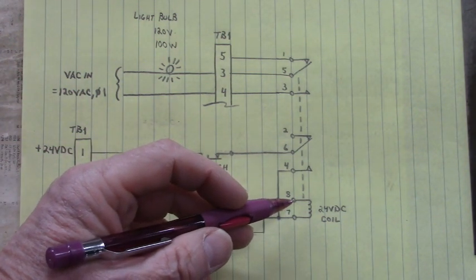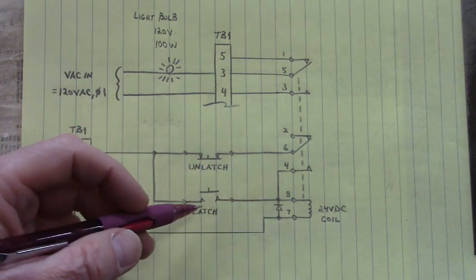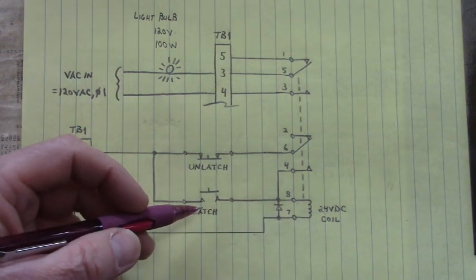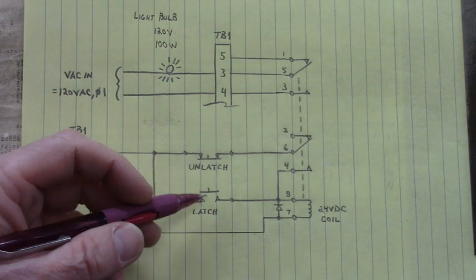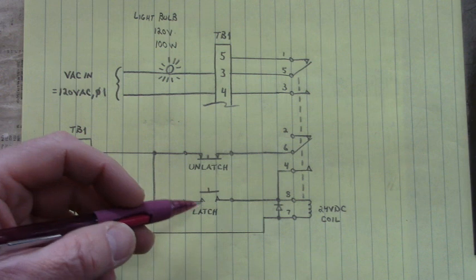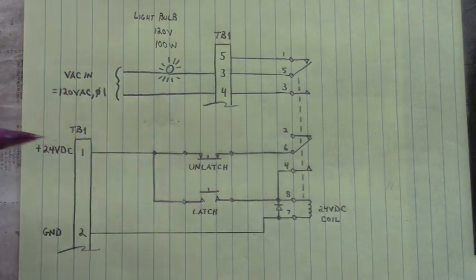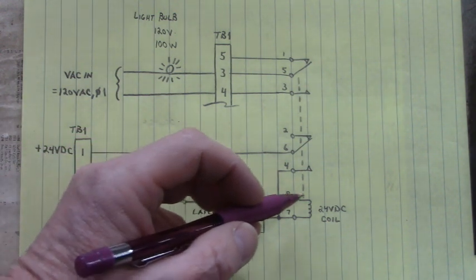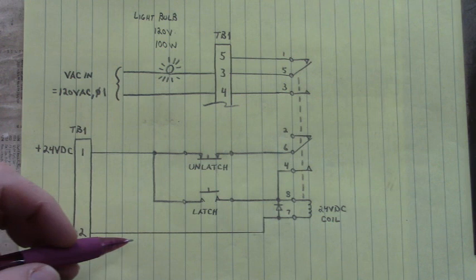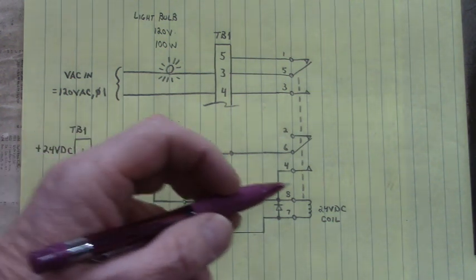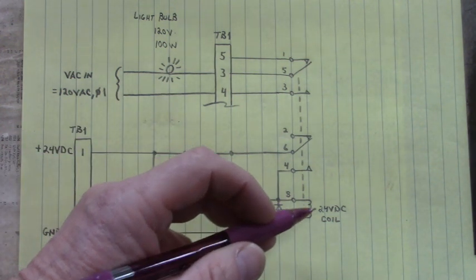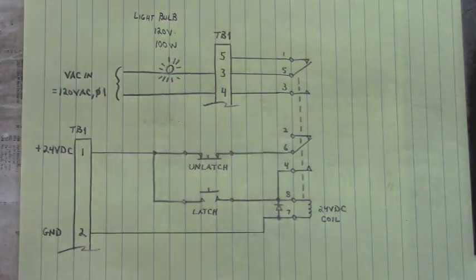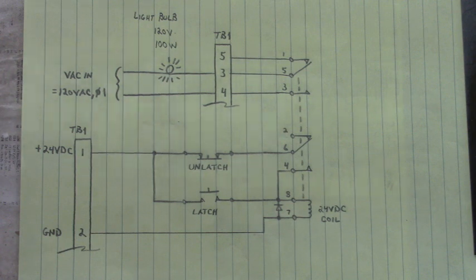This relay is set up to self-latch when I push the latch button, or we could call it a start button if you wanted to. The green button when closed will route this current from the 24 volt DC power supply, that's an external power, through the close button, through the coil, and back to that external power supply's ground, creating a magnetic field in this coil that will pull the contacts closed.